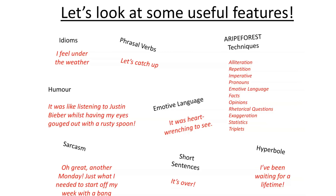Now let's take a look at some useful features. I'm sure you are aware of RIPE FOREST by now — the acronym I use with all of my classes. These techniques are very much suitable for more informal text types, so just be aware of that. Idioms — for example, 'I feel under the weather' or 'it's raining cats and dogs' — though don't use that one as no one actually says it. Phrasal verbs — a verb coupled with a preposition where the meaning changes, for example 'let's catch up, it's been a long time.'